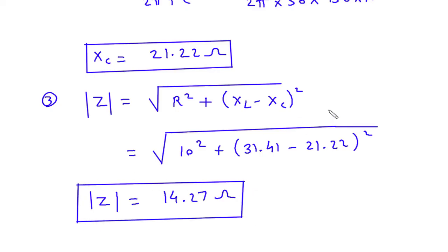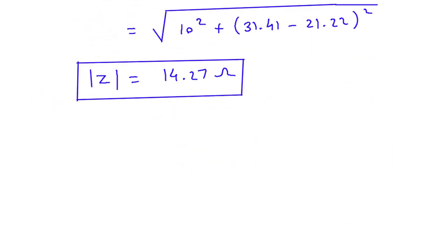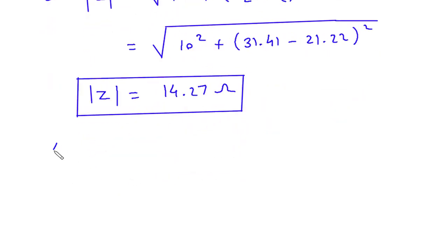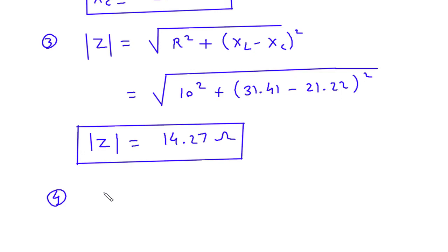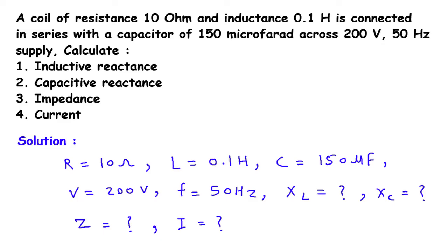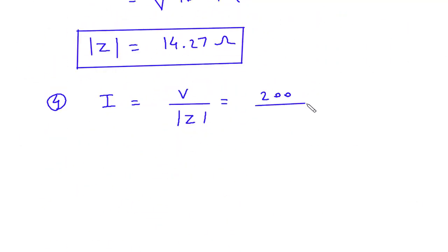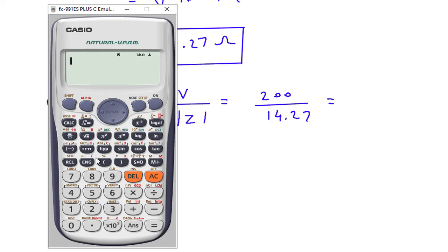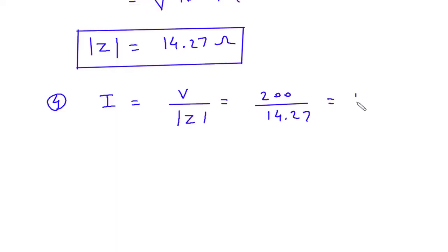Finally we have to find current. Number 4: current I is equal to V upon mod of Z. Voltage value is 200, divided by impedance value 14.27. So this will be 200 divided by 14.27, that is 14.01 ampere. Therefore I is equal to 14.01 ampere.